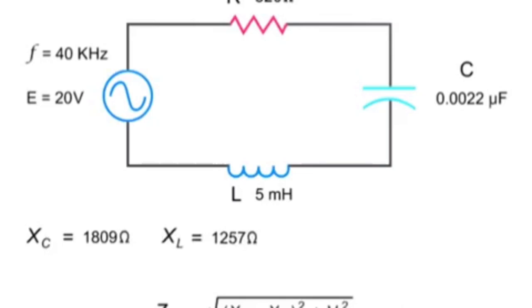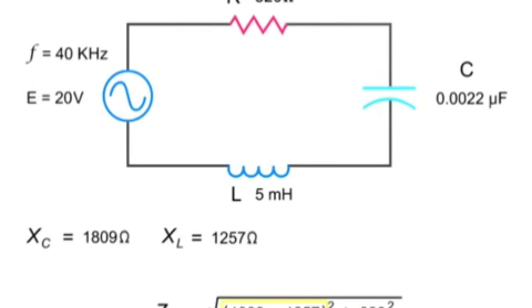To calculate the total impedance of the circuit, take the square root of the quantity capacitive reactance minus inductive reactance, squared, added to the resistance of the resistor squared. Thus, taking the square root of (1,809 ohms minus 1,257 ohms) squared plus 820 ohms squared gives you 988 ohms.